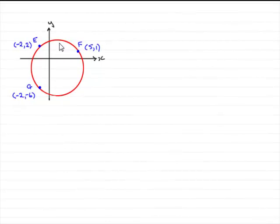Now, in this example, what I've got is three points E, F and G with coordinates minus 2, 2, 5, 1 and minus 2, minus 6. And we've got to find the equation of the circle that passes through these three points.